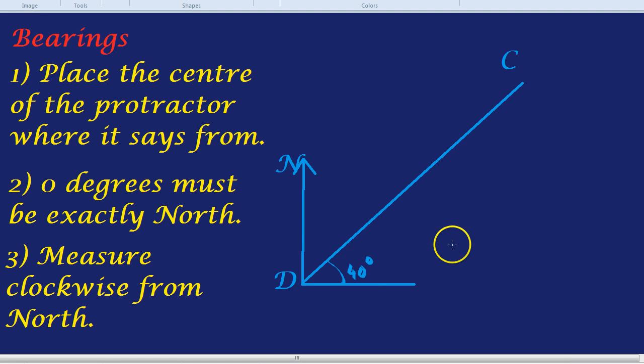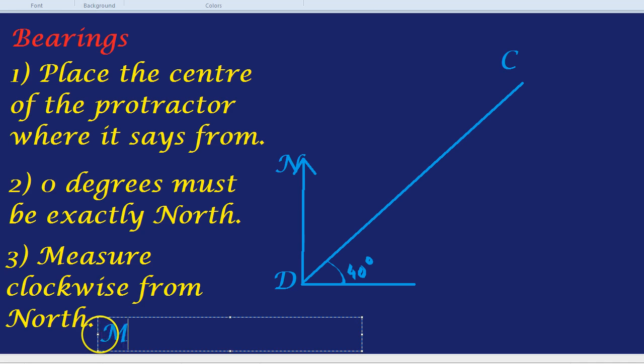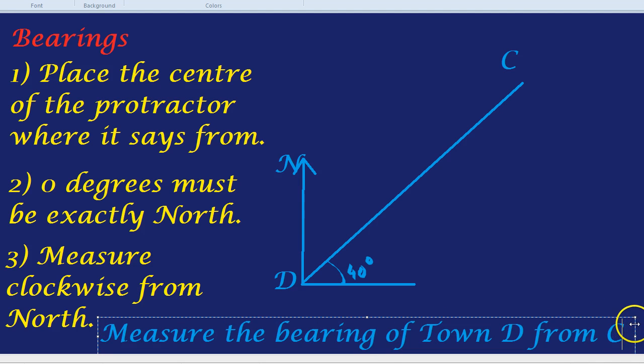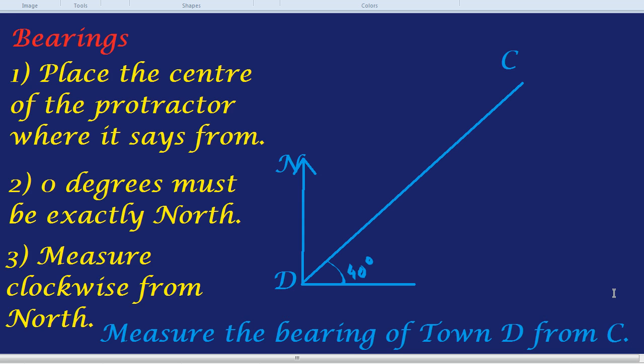And the question could be something like measure the bearing of, well, we'll do both of them actually, measure the bearing of D from C. Measure the bearing of town D from C. You might be wondering, how on earth are we going to do that without a protractor? For that, we're going to have to rely on some angle knowledge.